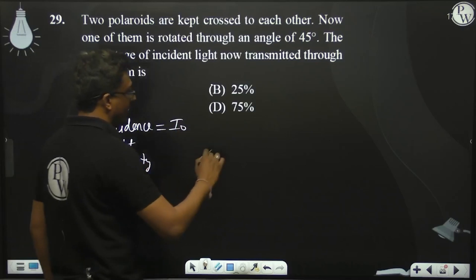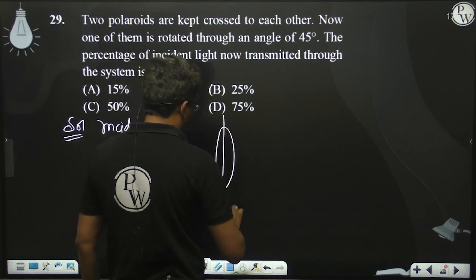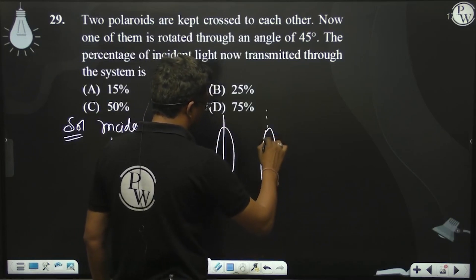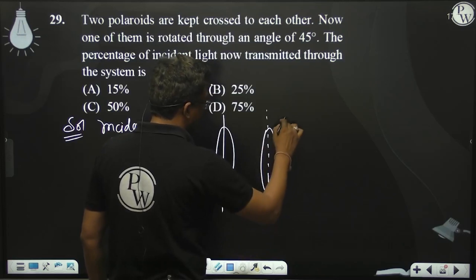According to this problem, you have two polaroids like this. Then you have to rotate by 45 degrees.